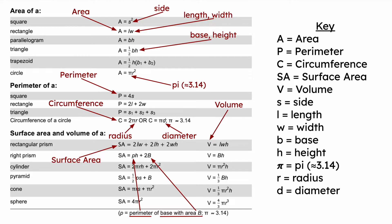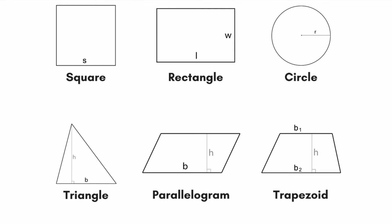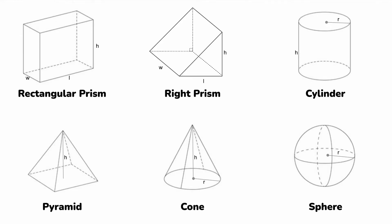You will also need to know all the shapes on the sheet. Hopefully you learned at least four of them by kindergarten, but it may have been a while since you saw a trapezoid — most people don't encounter those in daily life. There are also three-dimensional shapes: a right prism, a rectangular prism, a pyramid, a cone. You need to know all of these. If you're unsure, pause the video, make flashcards, and get familiar with them.